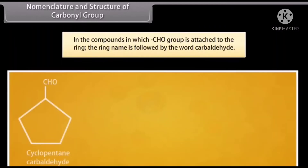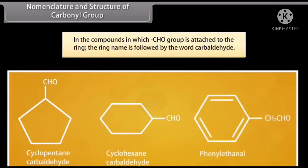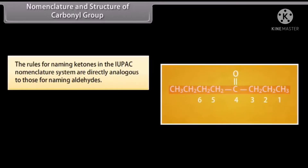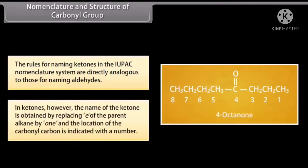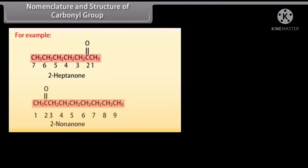In compounds in which the aldehyde group is attached to a ring, the ring name is followed by the word 'carbaldehyde'. For ketones in the IUPAC system, the name is obtained by replacing the '-e' of the parent alkane with '-one', and the location of the carbonyl carbon is indicated with a number. For example: 2-heptanone, 2-nonanone.